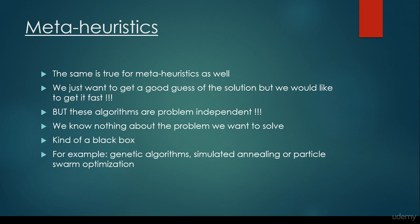What does it mean that these algorithms are problem independent? It means that, for example, we are able to solve the n-queens problem with the help of genetic algorithms. We are able to optimize a given function, so we are able to find the minimum or the maximum value. We are able to solve graph algorithms such as the traveling salesman problem, and we are able to use the same approach for all these problems. We are not able to use alpha-beta pruning for solving the traveling salesman problem, because alpha-beta pruning is used for chess or tic-tac-toe — that's why it is a heuristic algorithm. Genetic algorithms, simulated annealing, or particle swarm optimization, on the other hand, are meta-heuristic algorithms. We have the base theory and we are able to use it for several problems.